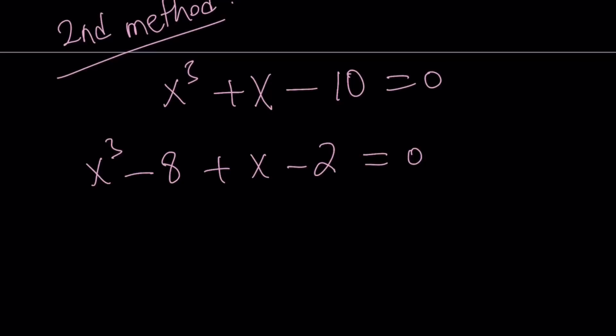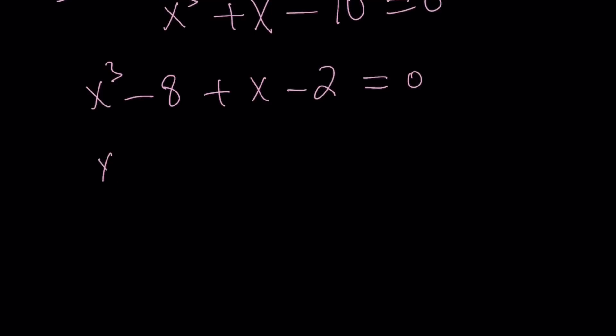this expression becomes factorable by grouping. Because x³ - 8 is a difference of two cubes, which can be written as (x - 2)(x² + 2x + 4). And x - 2 can be written as (x - 2) times 1.